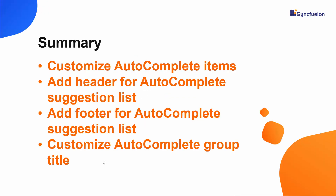Let me summarize some of the important points. We have seen how to customize the View Autocomplete items, how to add a header and footer for the autocomplete suggestion list, and how to customize the autocomplete group title. If you would like to see the working example, you can download it from the GitHub link shared in the description below. If you find this video useful, don't forget to click the like button and subscribe to our channel to watch more videos like this.